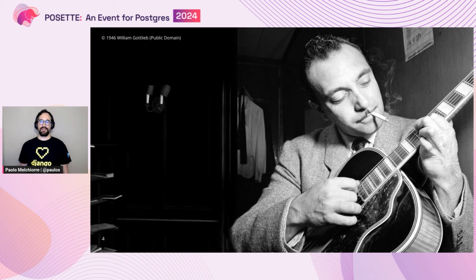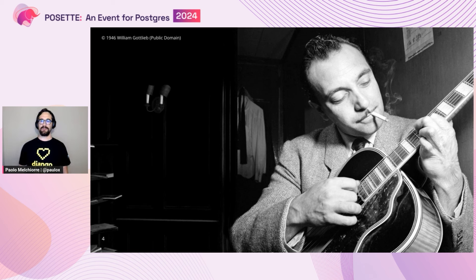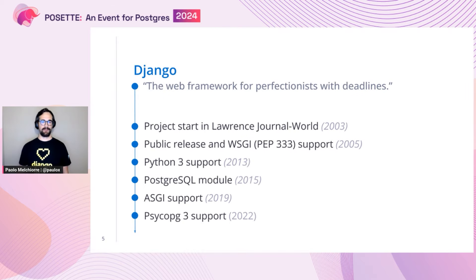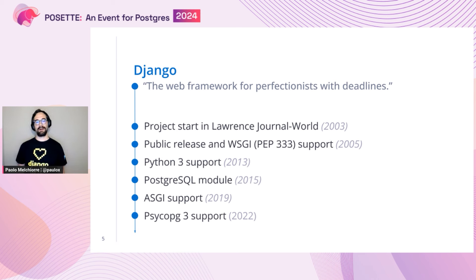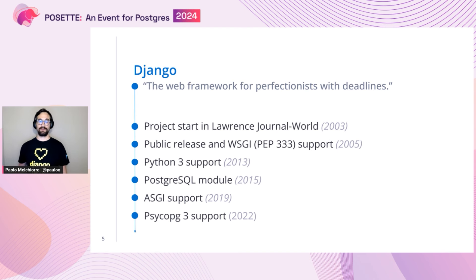I use Django for my projects, and I know this is not a Django-related conference, but I want to introduce this web framework a bit. Django was named after the guitarist Django Reinhardt and is a web framework with a lot of history, but it's also very flexible. The motto of Django is 'the web framework for perfectionists with deadlines,' and since its original public release in 2005, a lot of features have been added, including Python 3 support, a specific Postgres module, and ASGI support.